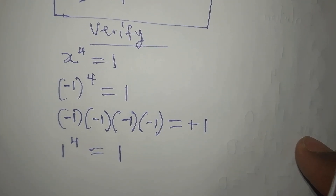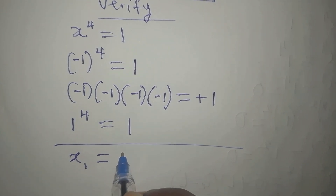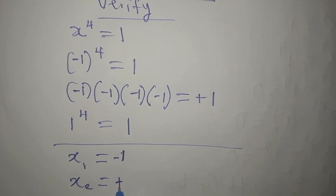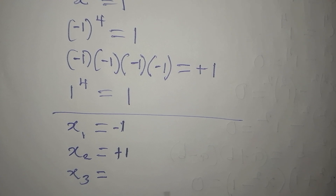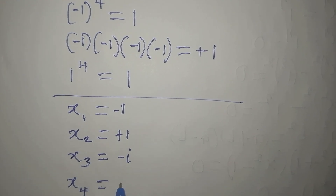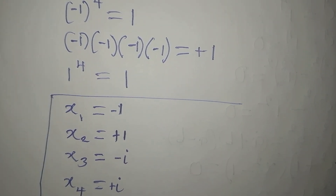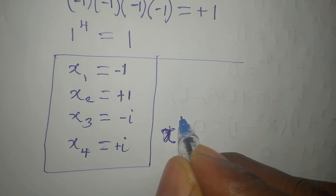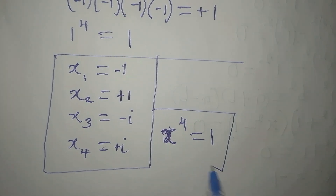Bringing all four solutions together: x₁ equals negative 1, x₂ equals positive 1, x₃ equals negative i, and x₄ equals positive i. These are the four complete solutions to the equation x to the power of 4 equals 1. Thank you for watching.